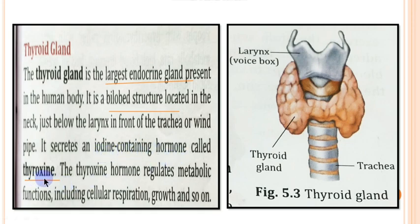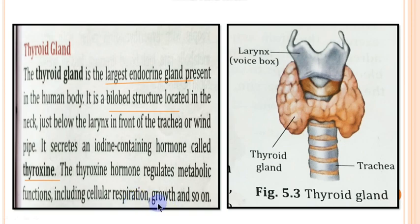The thyroid gland secretes an iodine-containing hormone called thyroxine. The function of thyroxine is that it regulates metabolic functions including cellular respiration and growth. Metabolic functions means all the functions carried out by the cells, and cellular respiration means energy production by the cells. The growth of cells is also carried out by this hormone.